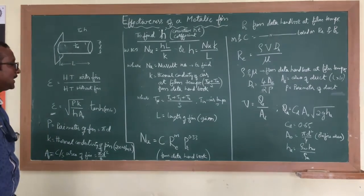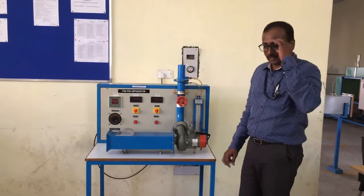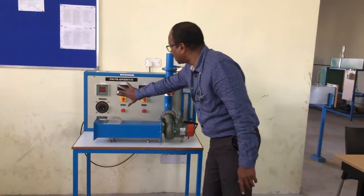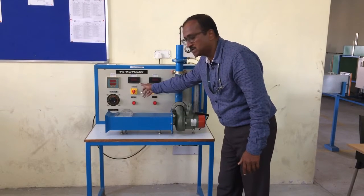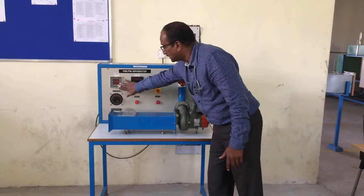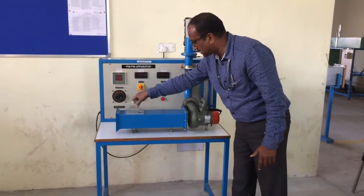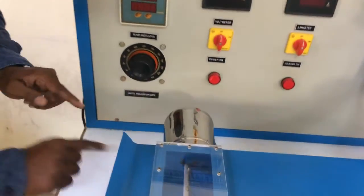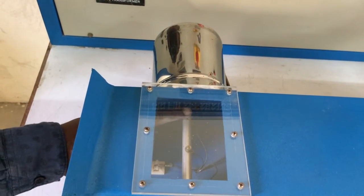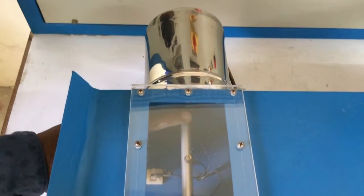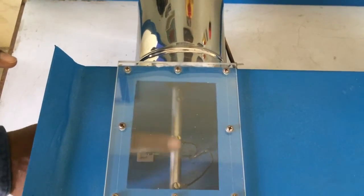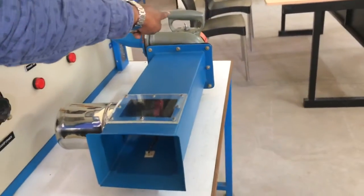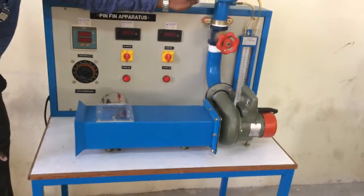Thank you. Let us now go to the experimental setup, where we will explain how the arrangements are made and how to take the readings. This is the setup: there is a control panel with a voltmeter and ammeter to measure the power supply to the heater, and a digital display thermometer to read the temperatures. The fin — the circular pin fin we have been discussing — is placed inside the duct here. Thermocouples are placed at different points along the fin to measure temperatures T2, T3, and T4. This duct is where the air flows.